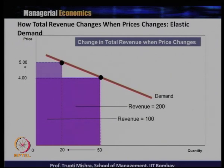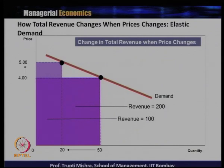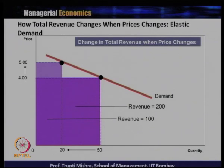Price increases from 4 to 5 rupees — a 25% increase. In elastic demand, a small change in price leads to a greater change in quantity demanded. Quantity falls from 50 to 20 units — more than a 50% decrease. As a result, revenue falls to 100 rupees, exactly half the original. In case of elastic demand, an increase in price leads to a decrease in total revenue.